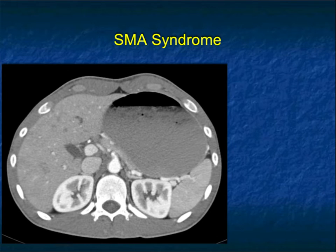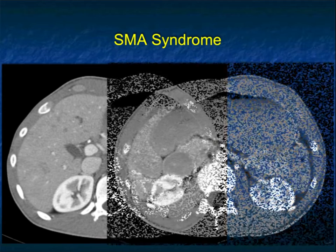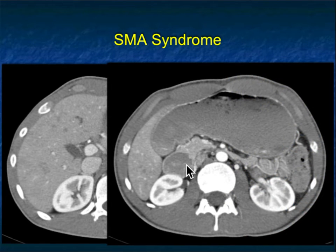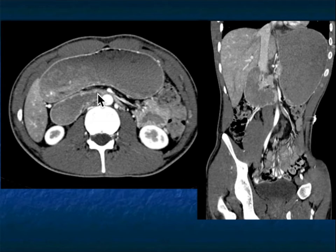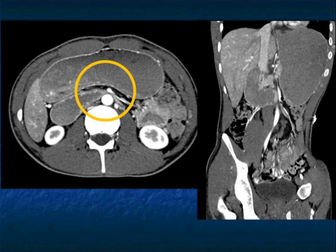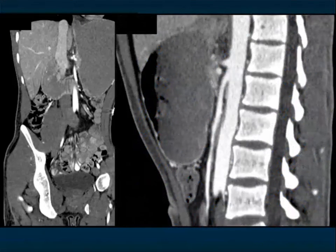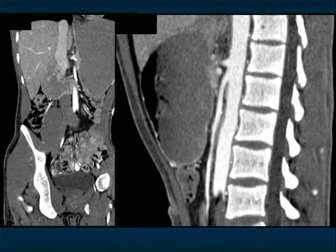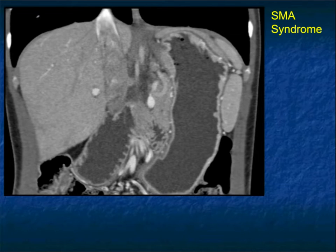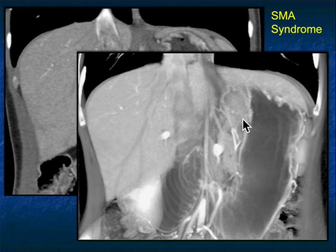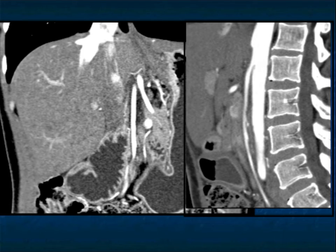Here's a good example of a patient thought to have gastric outlet obstruction. The stomach is distended, but following it down, the duodenum is also dilated and then narrowed right where it crosses beneath the SMA. On the coronal view, this is a wonderful example of SMA syndrome. On sagittal views, look at the angle of the SMA to the aorta — there's barely any angle. Between the SMA and the aorta, besides the duodenum, there's also the left renal vein, so you can get compression causing nutcracker syndrome.